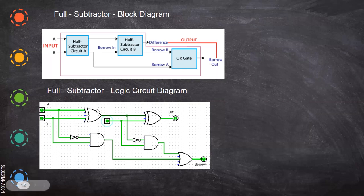The output of the second half subtractor gives the difference. The borrow outputs of both the first and second half subtractors are given to an OR gate, and that OR gate output is the borrow-out. This is the half subtractor circuit we already saw, implemented here — borrow given as input to the second stage, and the difference output shown here.